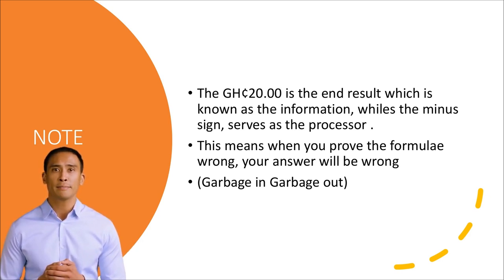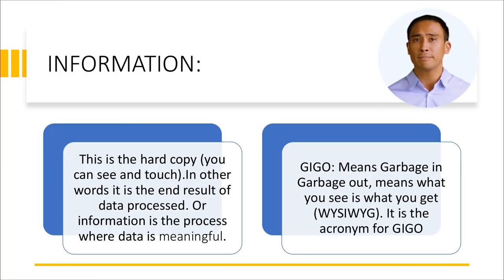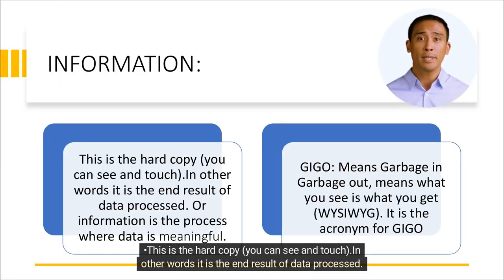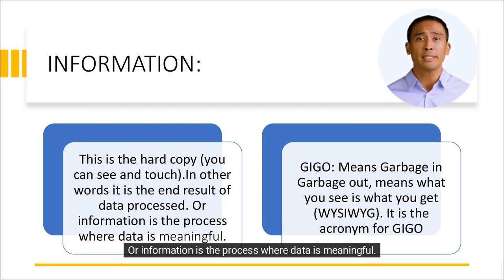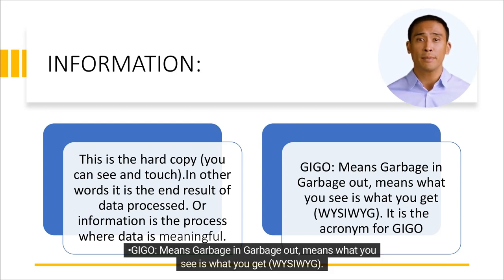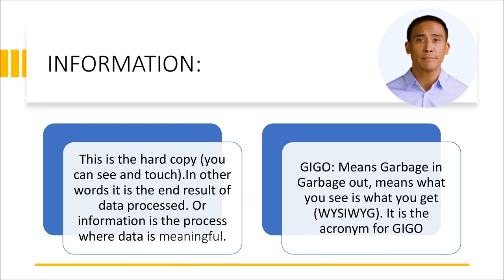Garbage in, garbage out. Information is the hard copy you can see and touch. In other words, it is the end result of data processed. Or, information is the process where data becomes meaningful. GIGO means 'garbage in, garbage out.' WYSIWYG — W-Y-S-I-W-Y-G — means 'what you see is what you get.' GIGO — G-I-G-O — is its acronym.